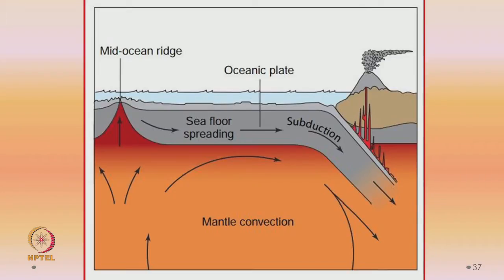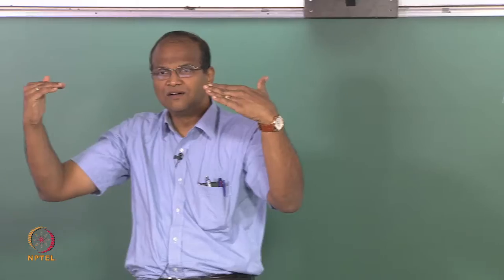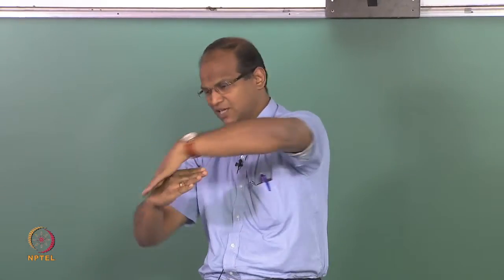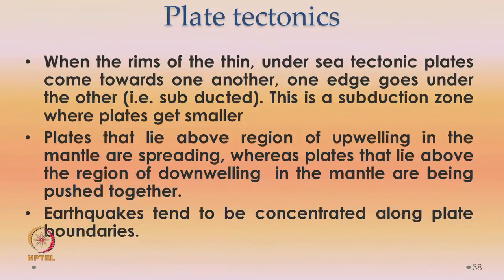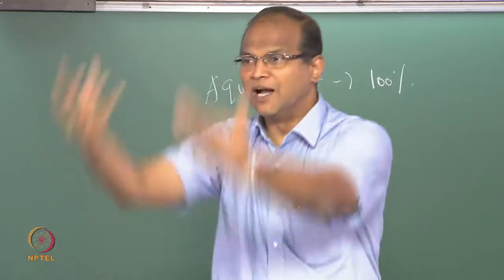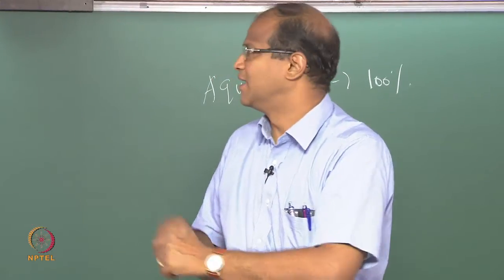There is an oceanic plate with mantle convection taking place. Here we have an oceanic plate and there is sea floor spreading and subduction — where this plate is sucked and goes into the mantle. When the rims of the thin undersea tectonic plates come towards one another, one edge goes under the other — this is called subduction, where the plate gets smaller. Plates above the region of upwelling from the mantle convection are spreading. Somewhere it is spreading and somewhere it is subducting. Plates above the region of downwelling are being pushed together — which means slowly but surely the shape and size of the continents is changing.